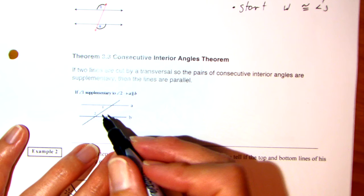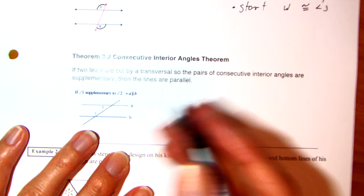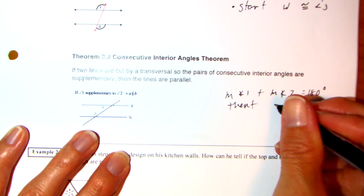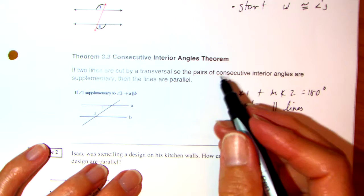How about consecutive interior angles? If you recall, consecutive interior angles are supplementary. So they're saying if these are supplementary — meaning if angle 1 plus angle 2 is equal to 180 — then the lines are parallel. Another word for consecutive interior would be same side interior.